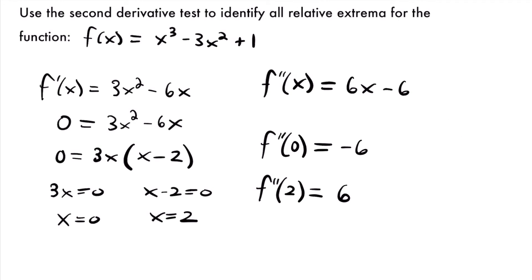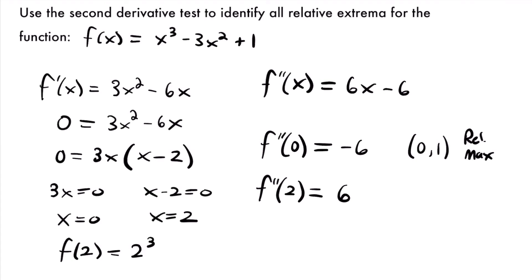Let's find the full coordinates for our relative maximum at x = 0 and our relative minimum at x = 2. Plugging 0 into our original function: 0³ - 3(0²) + 1 = 1, so our relative max is at (0, 1). For x = 2, f(2) = 2³ - 3(2²) + 1 = 8 - 12 + 1 = -3. So our relative minimum is at (2, -3). That's the final answer — we used the second derivative test to find all the relative extrema for this function.